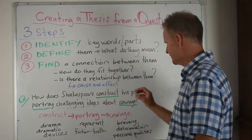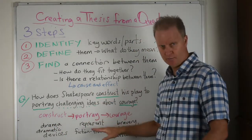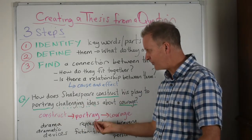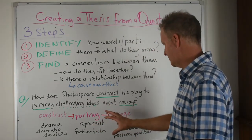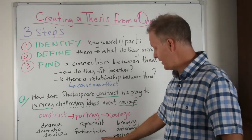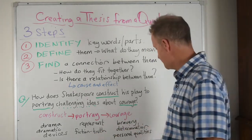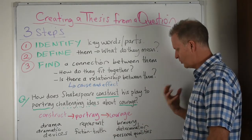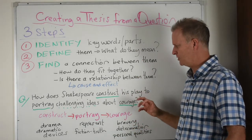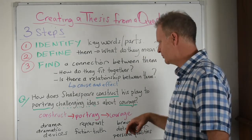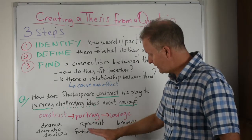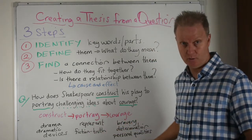We're looking at this idea of portraying challenging ideas — he's representing ideas, perhaps using dramatic devices to represent these challenging ideas. He's using a fictional story as a means of enabling truths to be revealed. And then we've got the word courage — bravery, determination, these are personal qualities. So we've defined what we think those words are. What we're saying is that it's the dramatic devices Shakespeare uses in a fictional realm that creates truth about personal qualities.